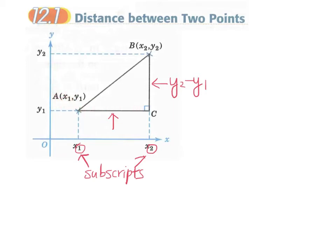For AC, we can imagine the x coordinate of point A is x1 — that is, point A is at a distance of x1 from the y axis. From here to here the distance is x1, and from here to here is x2, so therefore AC equals x2 minus x1.